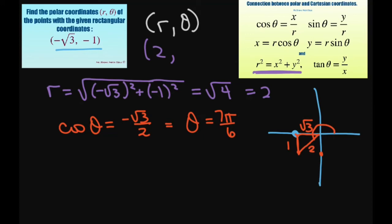You could also use tan of theta equals y over x, so that would be 1 over square root of 3, or square root of 3. And that would still give you 7 pi over 6.